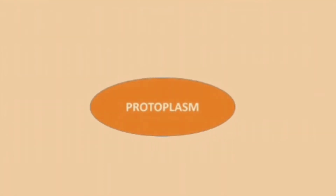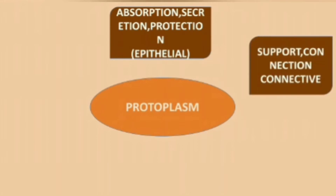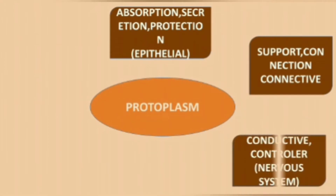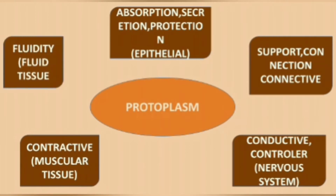The protoplasm differentiates into many types for absorption, secretion, and protection. Epithelial tissue is formed for support and connection; connective tissue is formed for support. For conduction and control, the nervous system is formed. Contractile tissue is muscular tissue, and fluid tissue provides fluidity.